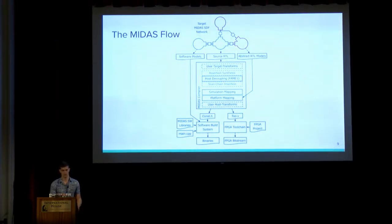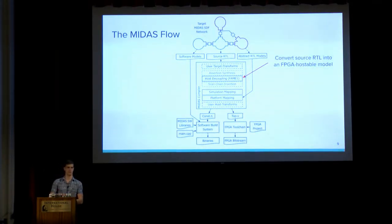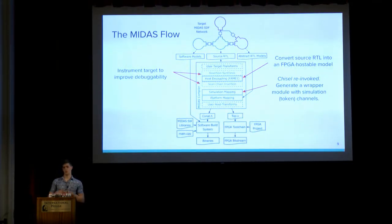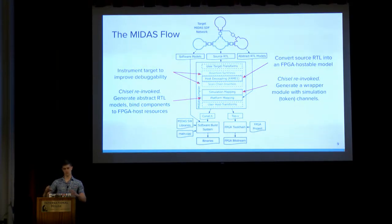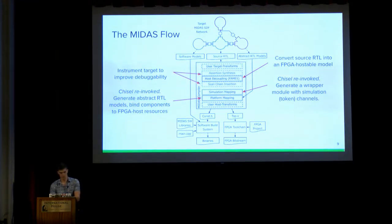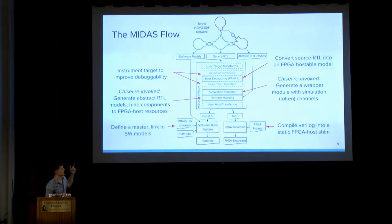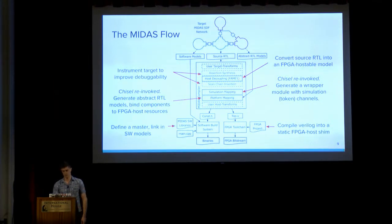At a high level, MIDAS works as follows: first you generate the RTL representing your target — the source RTL — and pass it to the compiler. It decouples it, transforming it into a model that can consume and produce tokens. It can then be instrumented to improve debuggability. MIDAS then performs simulation mapping, reinvoking Chisel to generate a wrapper implementing all simulation token channels. It reinvokes Chisel again to generate another wrapper, implementing all abstract RTL models, binding simulation components to host DRAM, and generating a simulation control bus to reconfigure all models. The output is a Verilog file for your FPGA shell project and a header describing the memory map, which you link into your driver with software libraries and software models.